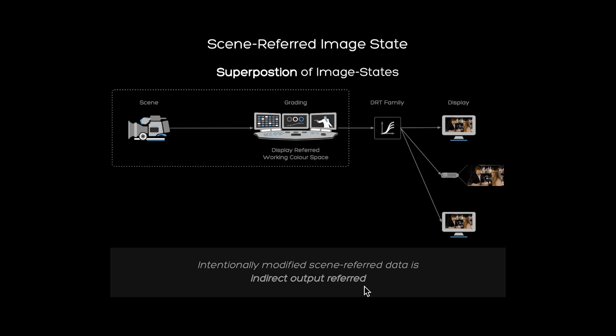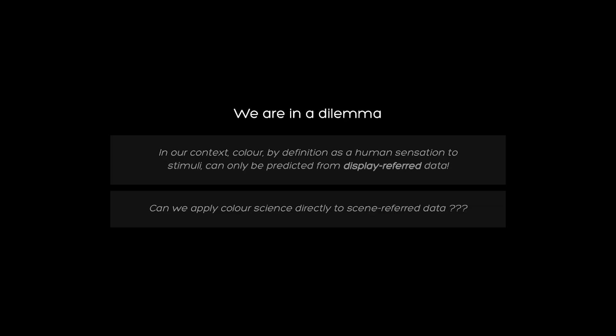This means as soon as you modify scene-referred data while looking at a display, that data becomes indirectly output-referred. So there cannot be a graded scene-referred image state — that has huge implications for archives and applied color science. We are in a dilemma, because color by its definition as a human sensation is intrinsically display-referred. So can we apply color science to scene-referred data, or do we need to take great care when applying color science models originally developed for display-referred image data to scene-referred image states?